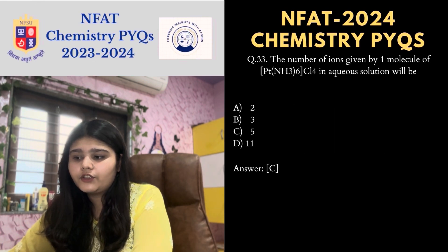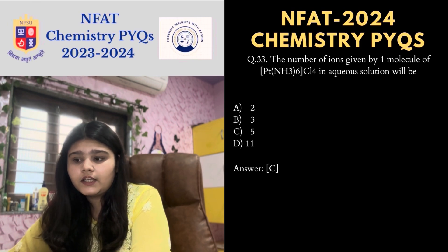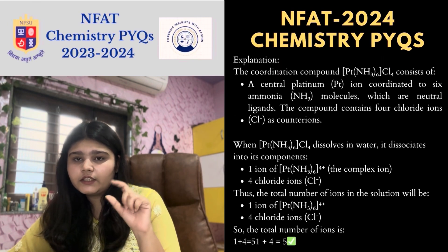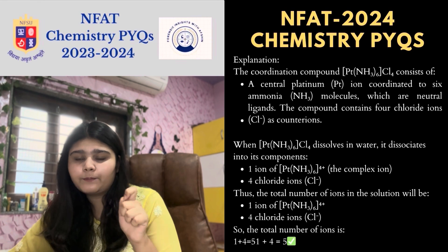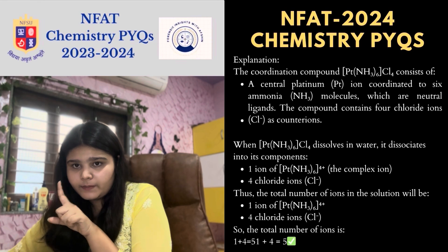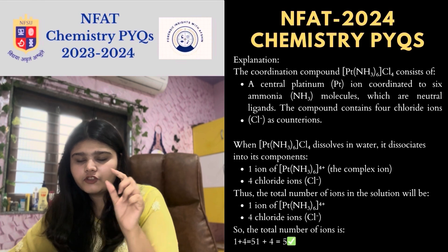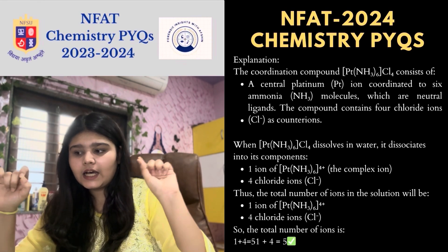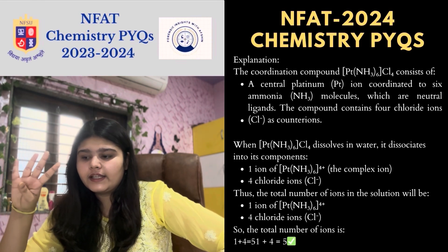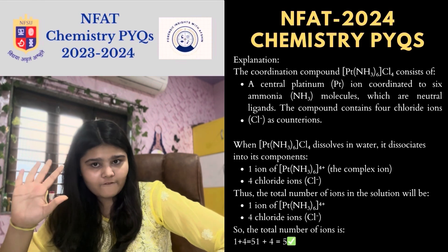Next MCQ: the number of ions given by one molecule of [Pt(NH₃)₆]Cl₄ in aqueous solution will be 5. When the molecule dissolves in water, it dissociates: one ion of [Pt(NH₃)₆]⁴⁺ as a whole, plus 4 chloride counter ions — because the central platinum is coordinated with 6 neutral ammonia ligands, and 4 chloride ions exist outside the coordination sphere. Total ions = 4 + 1 = 5.